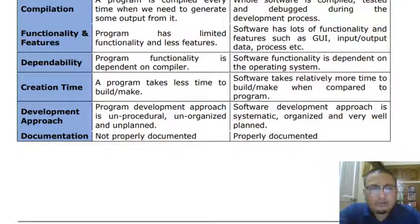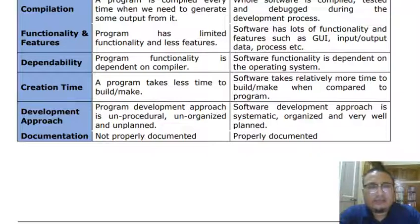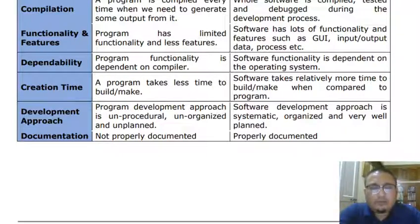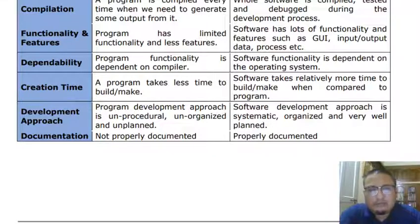In terms of creation time, a program takes relatively less time to be created, whereas software takes a considerable amount of time because it must go through a set of identifiable software lifecycle phases before it is completed, deployed, and used. In terms of development approach, while developing a program it is not mandatory to abide by software engineering principles, whereas when developing software it is very much mandatory. Program development may be unprocedural, unorganized, or unplanned, whereas software development should be completely systematic, disciplined, organized, and well planned.